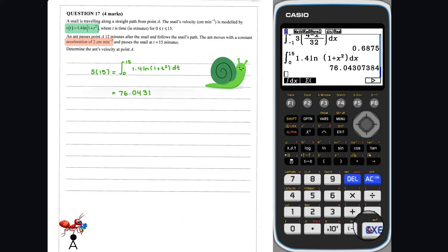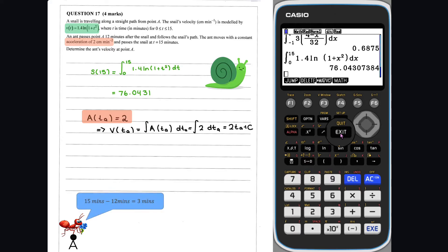We can work out the ant's velocity function using the fact that. We are told that the ant travels from point A and overtakes the snail in 3 minutes. Given that the distance from A to the snail is 76.0431.